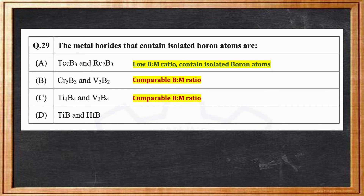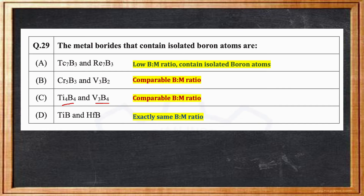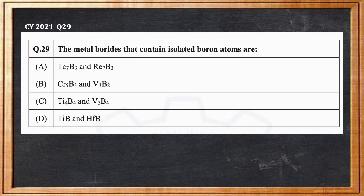In option C, Ti4B4, the boron-to-metal ratio is again comparable — equal. In option D, TiB and HfB, the B:M ratio is exactly 1:1. Since low B/M ratio corresponds to isolated boron atoms, the answer is option A: Tc7B3 and Re7B3.